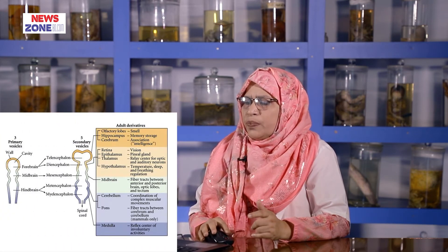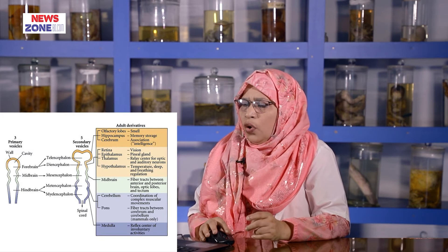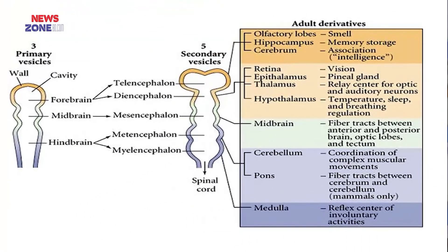The derivatives: the telencephalon is responsible for the olfactory lobes, hippocampus, and cerebrum. The diencephalon gives rise to the thalamus, hypothalamus, metathalamus, subthalamus, and also the retina. The midbrain forms the midbrain. The metencephalon forms the cerebellum and pons. The myelencephalon develops the medulla oblongata. The most caudal part is the spinal cord.